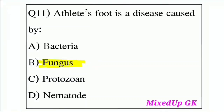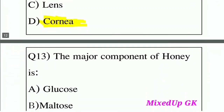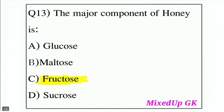Question 12: In eye donation, which part of the donor's eye is utilized? Option A: Iris, Option B: Retina, Option C: Lens, Option D: Cornea. The correct answer is Option D: Cornea. The cornea is the part of the donor's eye that is used in eye donation.